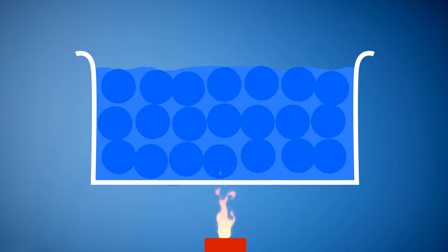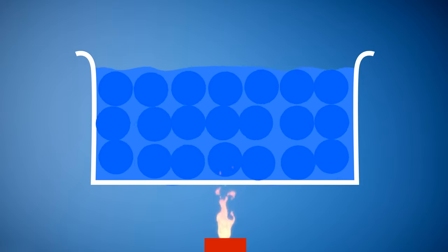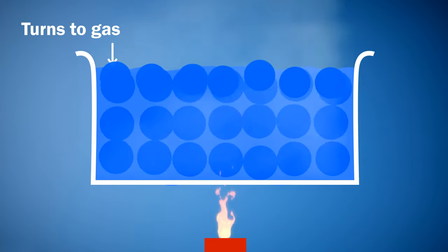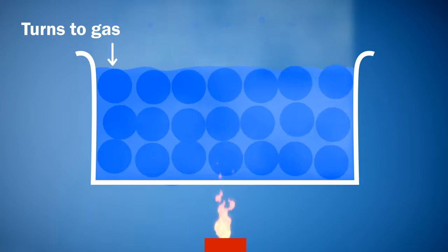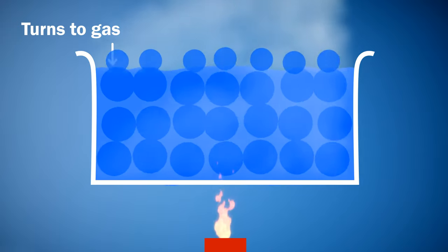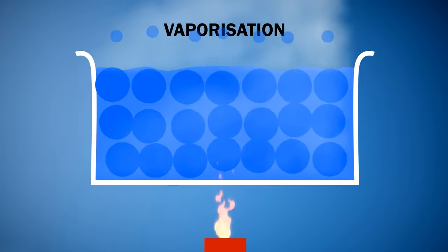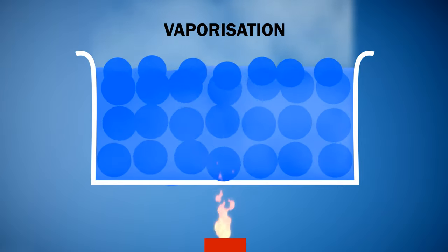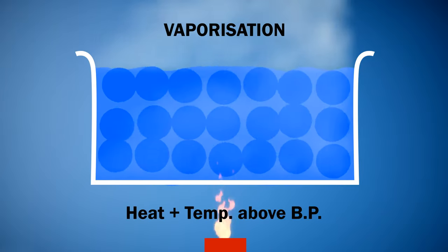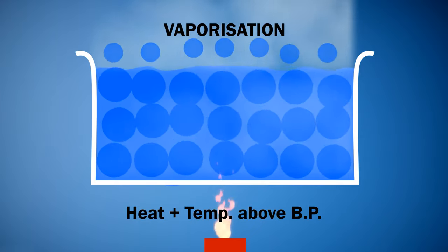As a result, liquid particles become free to move around and liquid starts becoming gas. This process is also called vaporization. Vaporization of liquid takes place on addition of heat and at temperature above the boiling point.